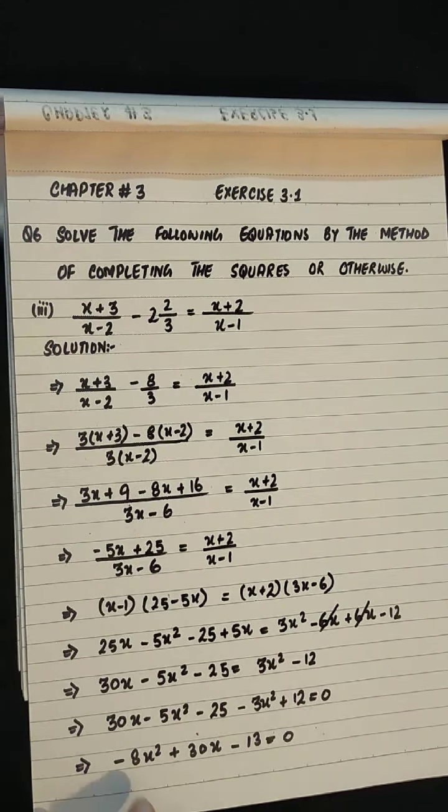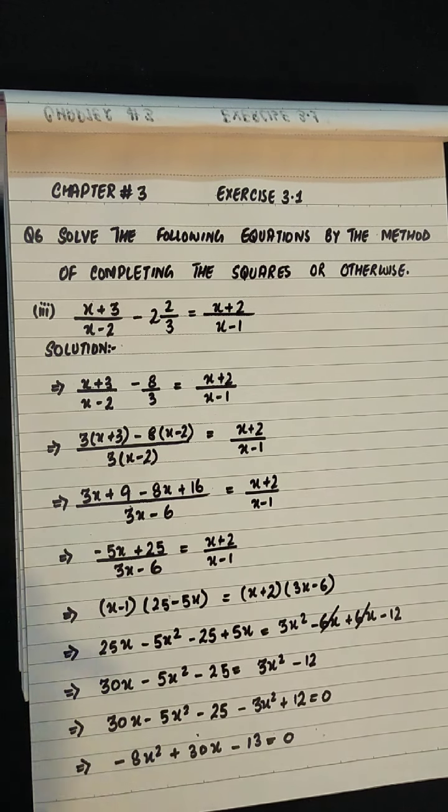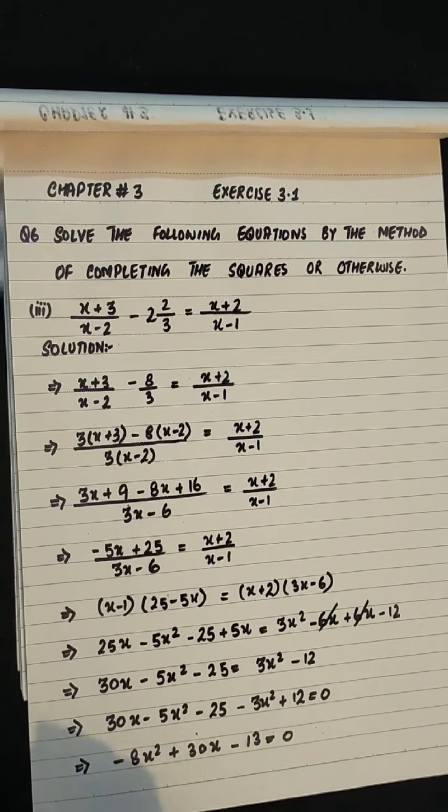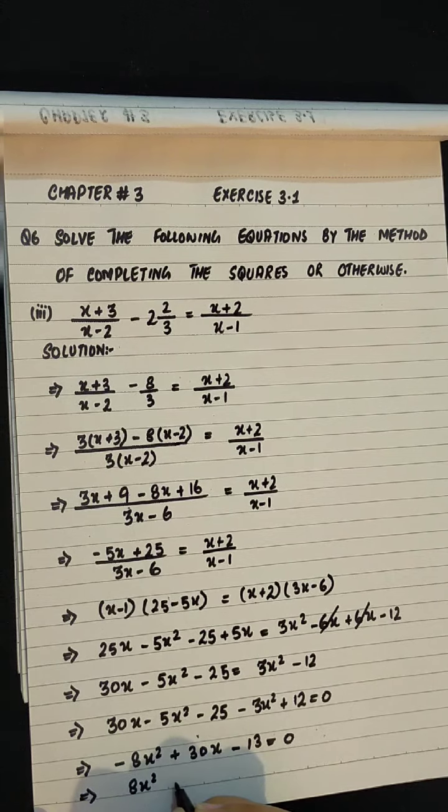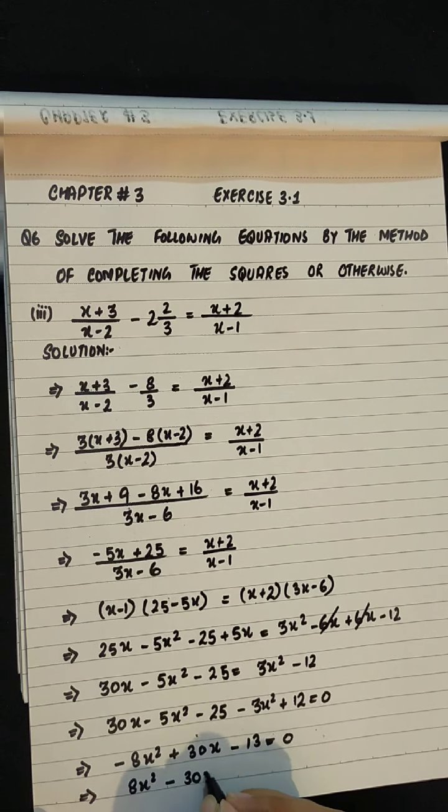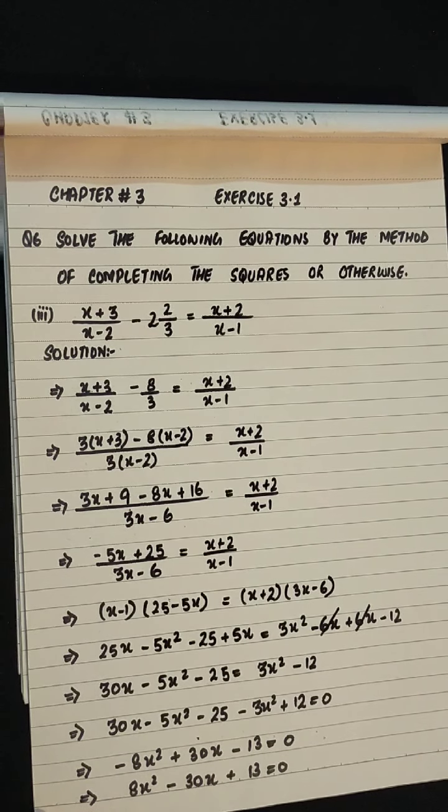This will be minus common so that the term is positive. So this will be 8x square minus 30x plus 13 equals to 0.